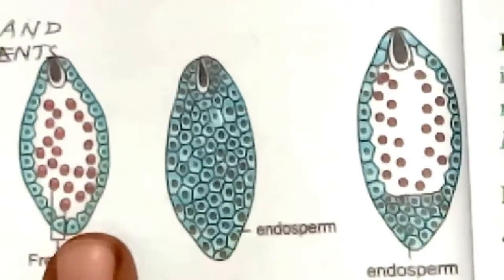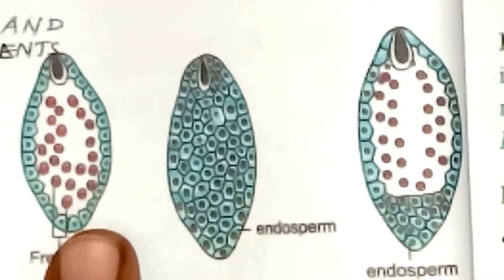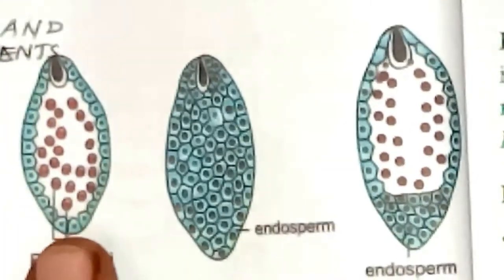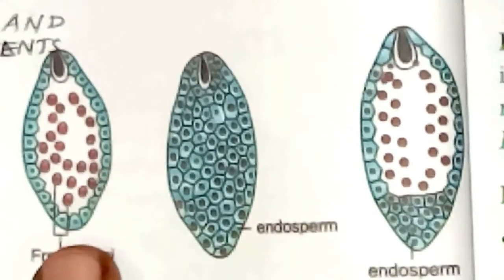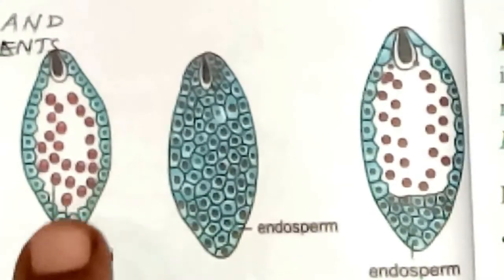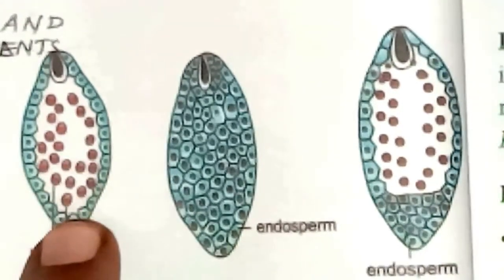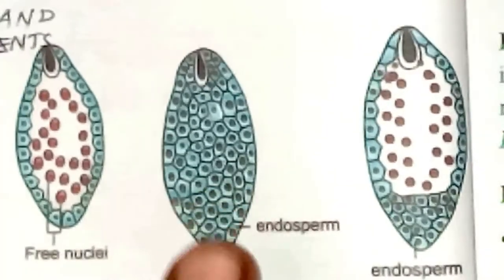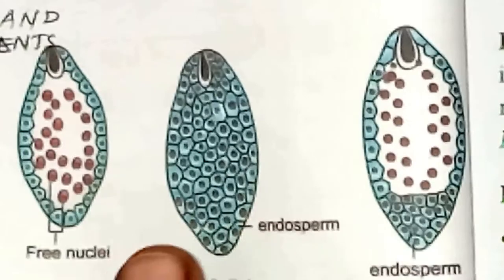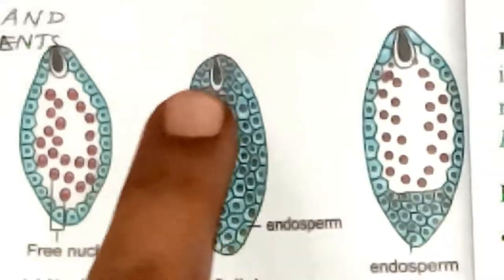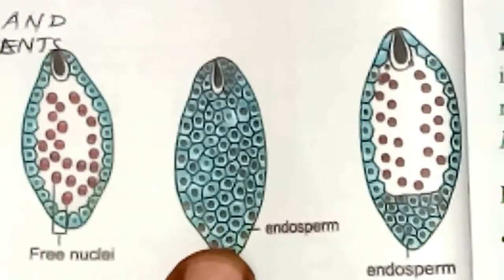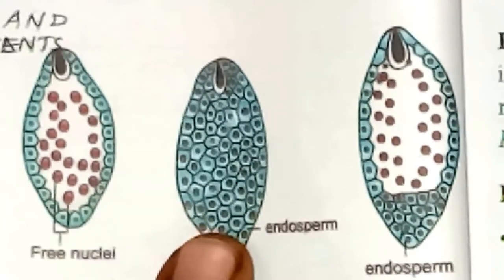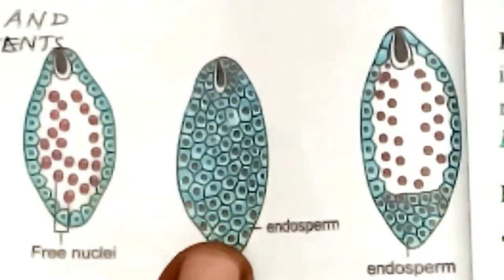In nuclear endosperm, all nuclei lie freely inside the endosperm in a free nuclear condition. This is seen in Coccinea, Capsella, and Arachis (groundnut). In cellular endosperm, when the primary endosperm nucleus divides into two nuclei, it is immediately followed by wall formation. This type is seen in Adoxa, Helianthus (sunflower), and Scoparia.